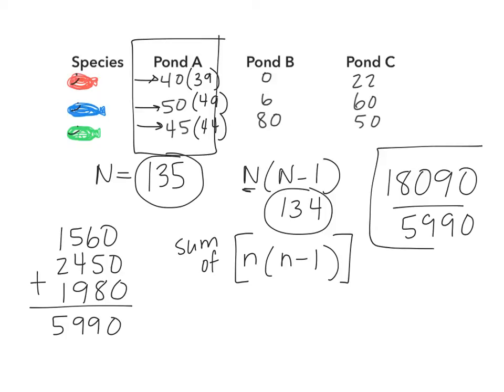So we've solved the top, we've solved the bottom. All it takes now is to divide that out. When you divide these two numbers, your value is 3.02. So there's your answer. Now that tells us the biodiversity of pond A is 3.02. That doesn't tell us a lot on its own.